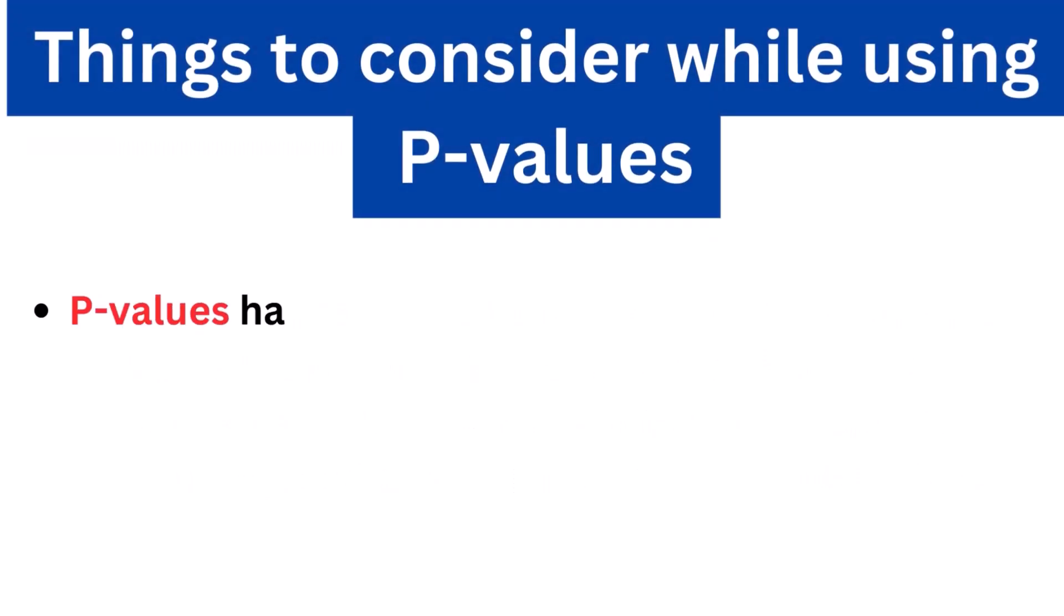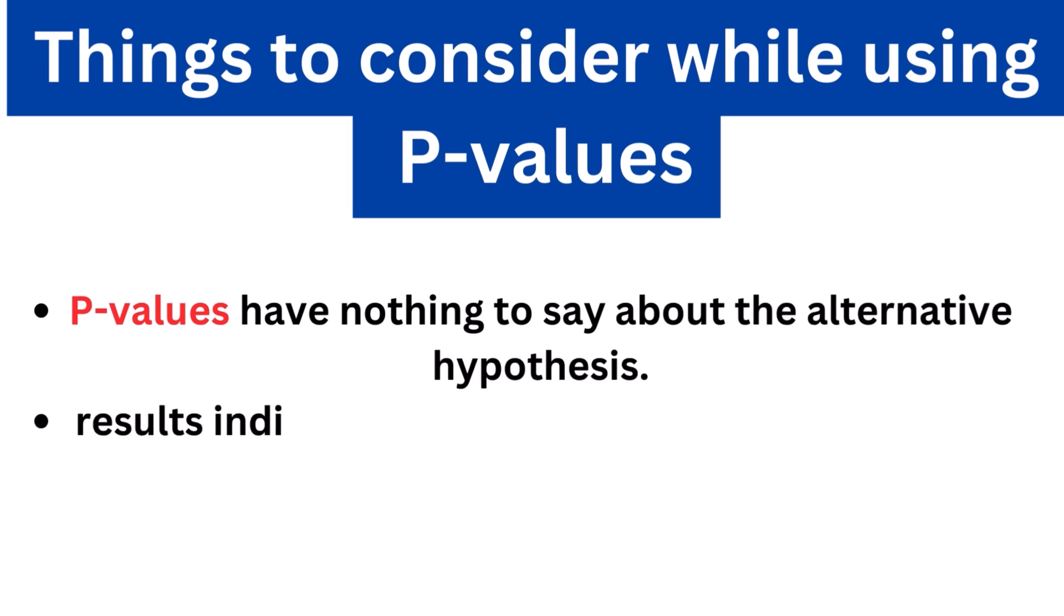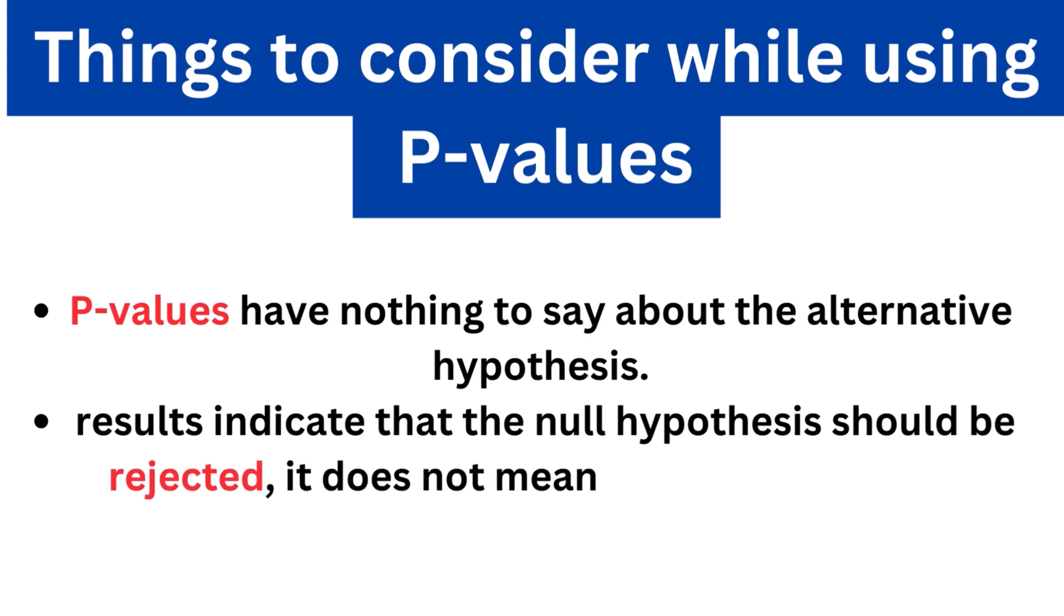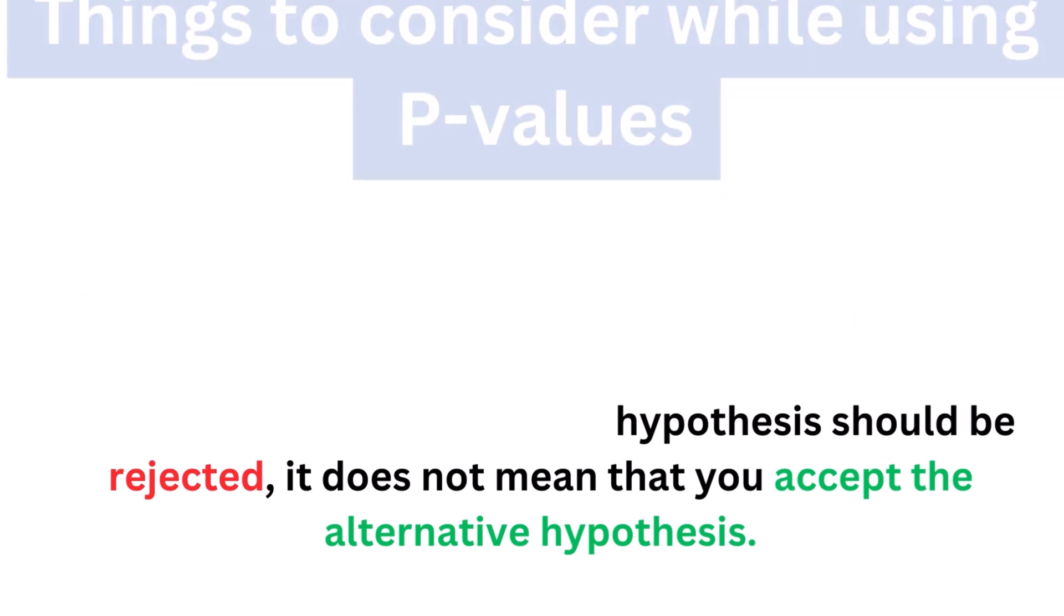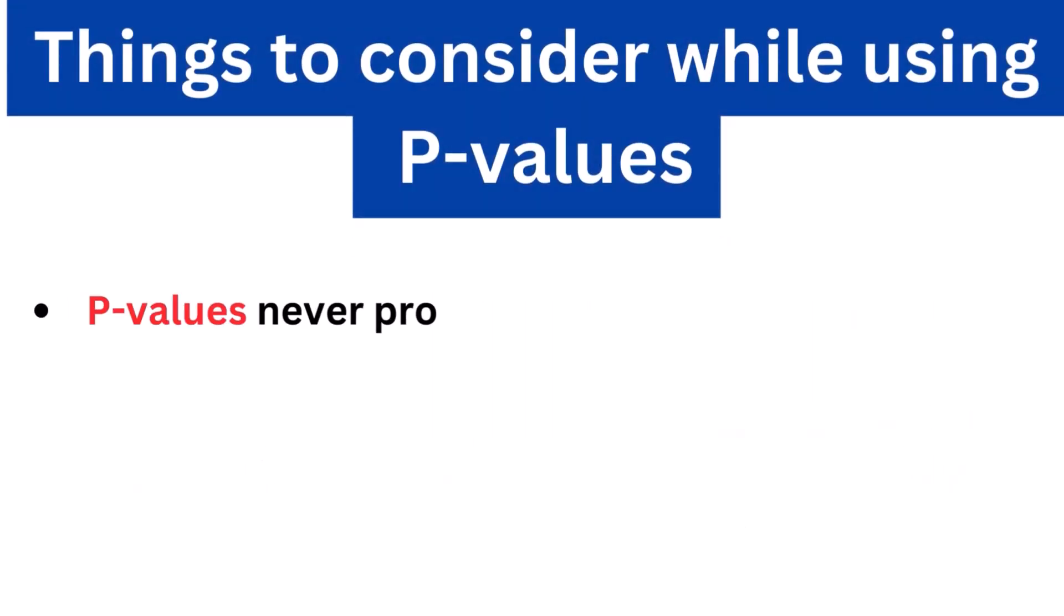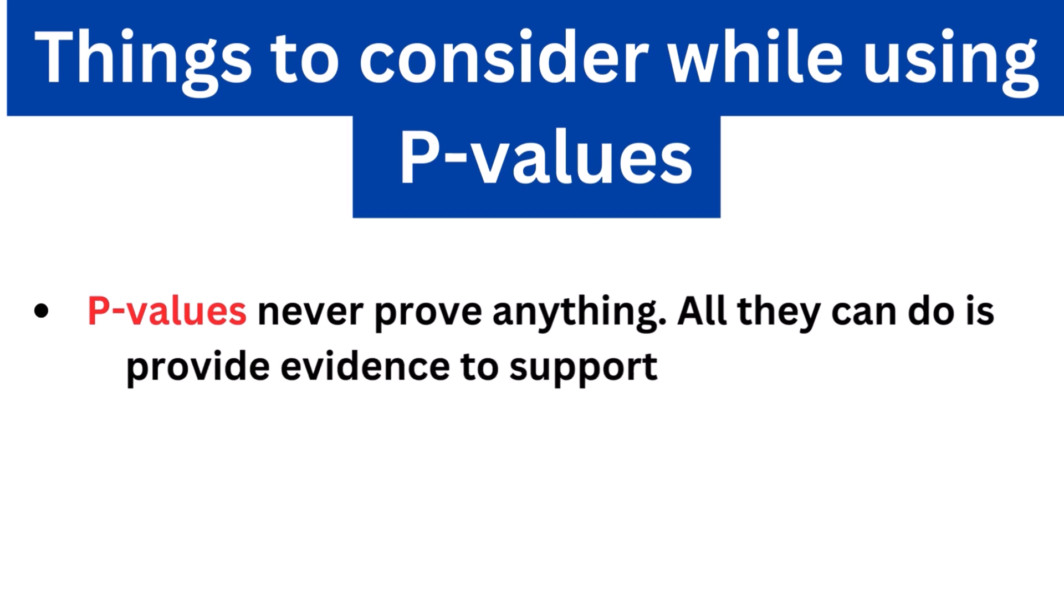P-values have nothing to say about the alternative hypothesis. If your results indicate that the null hypothesis should be rejected, it does not mean that you accept the alternative hypothesis. P-values never prove anything. All they can do is provide evidence to support rejecting or not rejecting the null hypothesis.